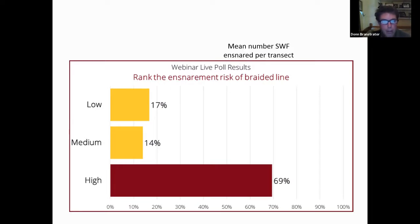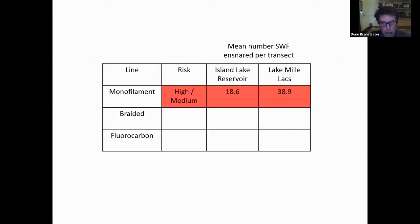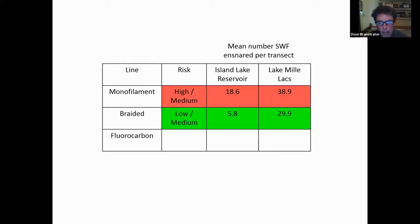For braided line, more people voted high compared to the monofilament survey. But we found low to medium. In comparison to monofilament, the contrast was pretty stark in Island Lake. In Lake Millax there was a numerical difference but it wasn't statistically significant — whereas monofilament and braided were statistically different in Island Lake.